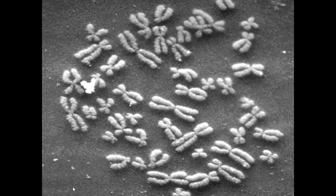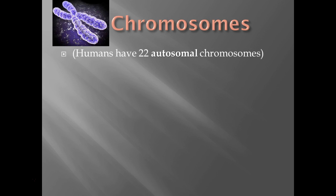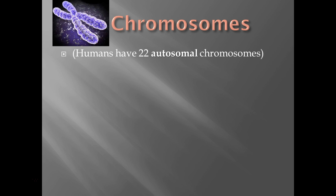What we're looking at right here is a picture of all of the chromosomes that are inside a normal human cell, which should be 46 total. You'll see that some of them are larger, some of them are smaller. We're going to focus, for this particular part, on the sex chromosomes, the ones that are at the very end.